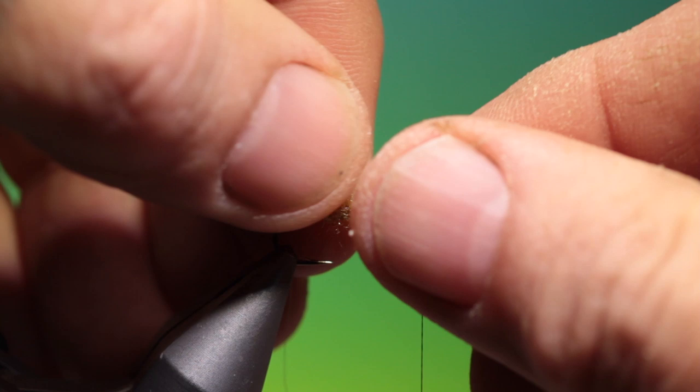So then we take our Antron and we pull this forward, get it to spread around the hook shank.